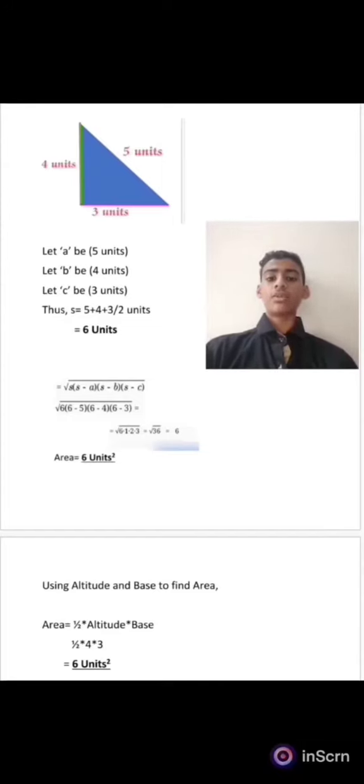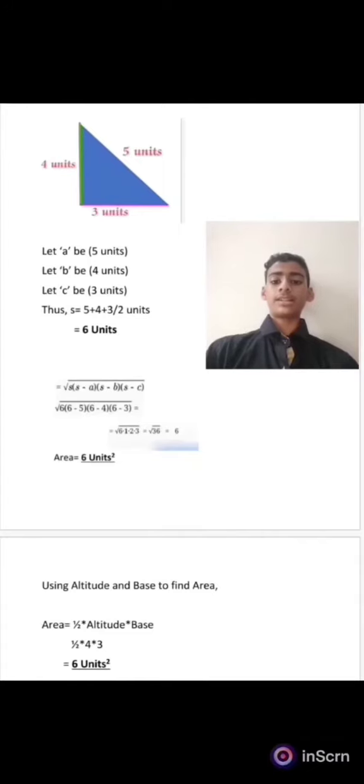Using Heron's formula to calculate the area, we will get the square root of 6×1×2×3, that is 6 units squared. If we check with the altitude and base formula, we will get half times base times height equals 6 units squared, which is equal to the area when calculated with Heron's formula.